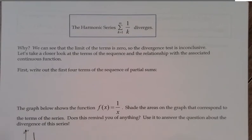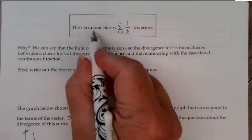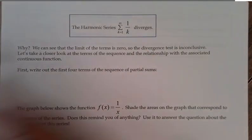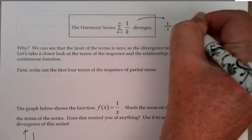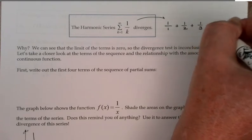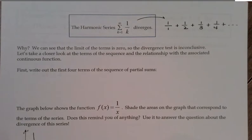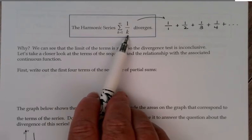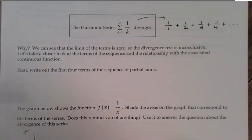So that's the basic divergence test. Next, we're going to look at a special series that's common enough that we actually give it its own name. We call it the harmonic series, and it's the series where we just add up the fractions 1 over k: 1/1 plus 1/2 plus 1/3 and so on. This theorem tells us the harmonic series diverges. But why? We can certainly see that the limit of the terms is zero — as k goes to infinity, 1 over infinity would become zero — so my divergence test is inconclusive. The terms do go to zero. Let's take a closer look by comparing to the associated continuous function.